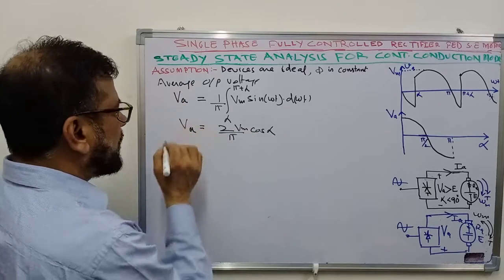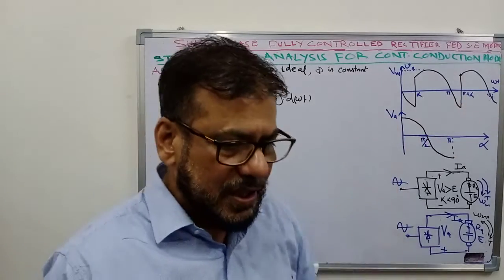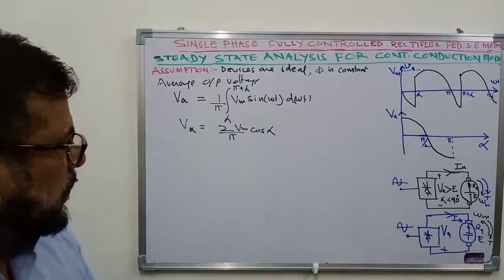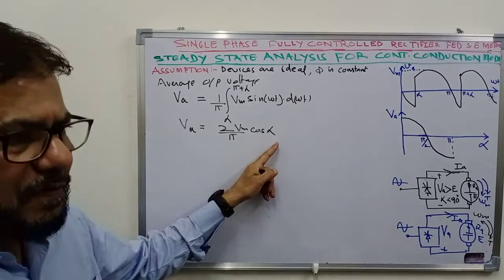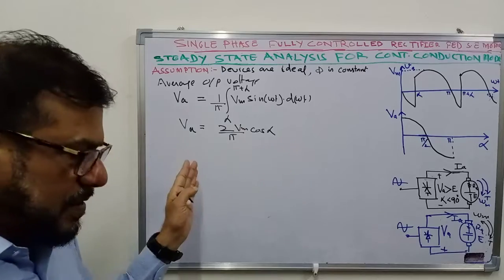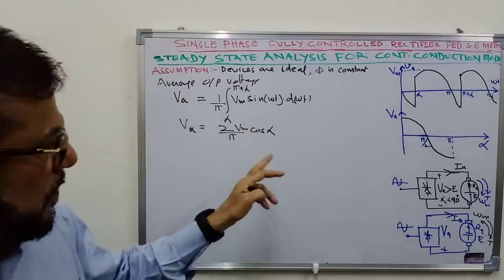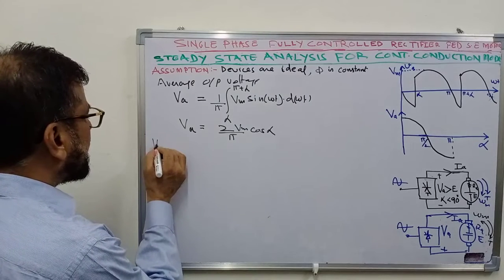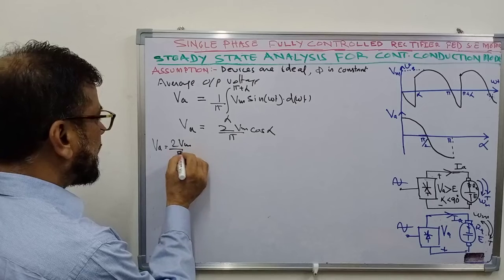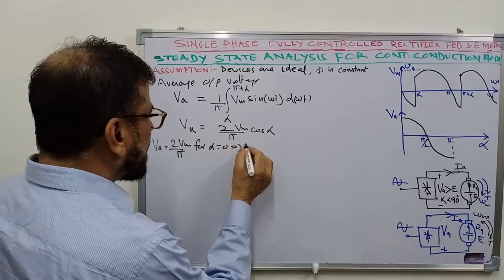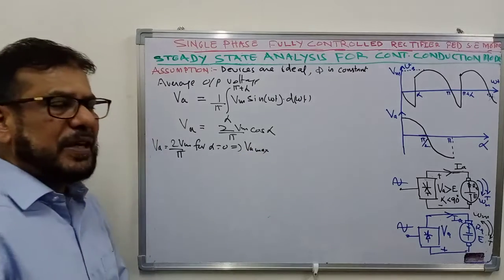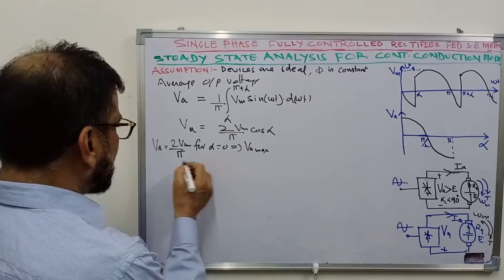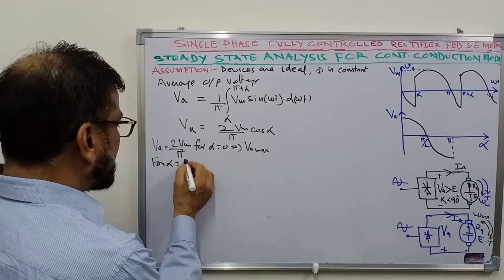This is the average value of output voltage in the case of continuous conduction. Alpha can theoretically be varied from 0 to 180 degrees. cos(α) equals 0 when alpha equals 90 degrees; it is positive before that. For alpha equal to 0, it equals 1, giving Va_max equal to 2Vm/π. For alpha equal to 90 degrees, Va equals 0.